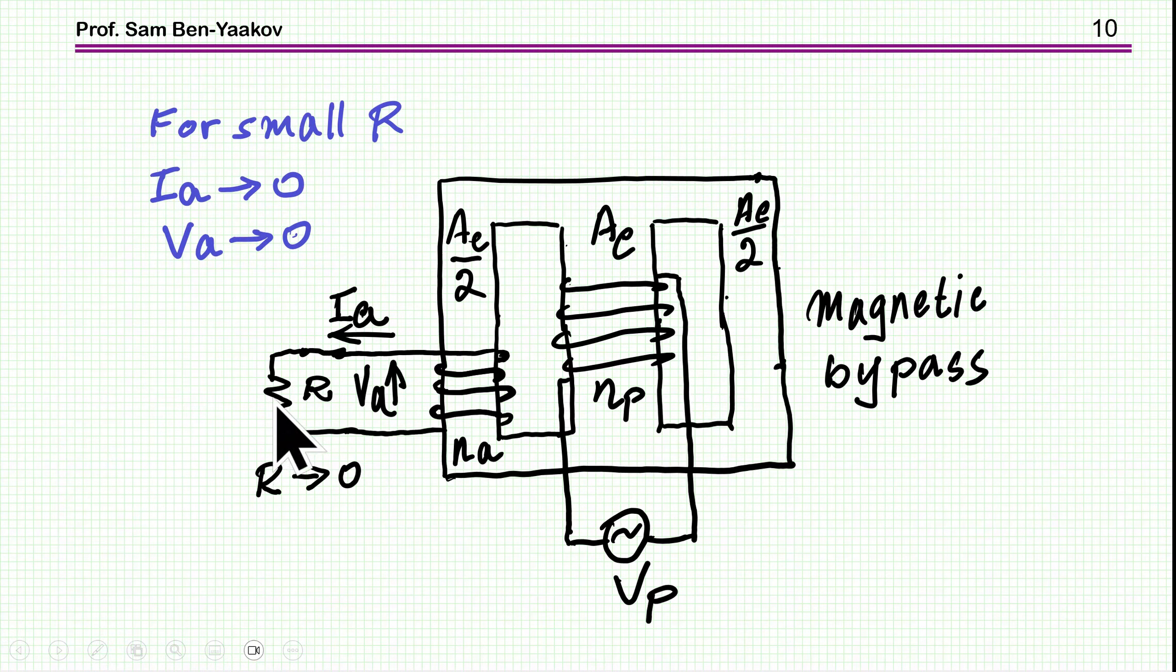So if we have this short, this is the case of the short, then we have an uneven distribution of the flux. And in this leg, then the flux will be much lower and the current will be also low. So this behavior is really different from a regular transformer, because if we have a transformer and we are shorting the output, we would expect a large current due to the short. Now, in this case, not so, because of the flux distribution or redistribution, I should say, that most of the flux is now passing through this magnetic bypass. And therefore, the voltage is low here and the current will be low.